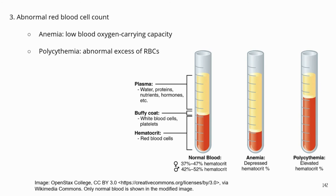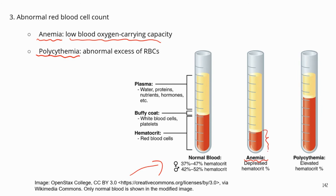The third condition is about red blood cell count. If you have a very low red blood cell count, that could lead to anemia — basically a condition where the body has very low blood oxygen-carrying capacity. This could be caused by many reasons: if your body does not take in enough iron, or if you have blood loss. On the other hand, if your body has too many red blood cells, this condition is called polycythemia. You can see in the diagram that in anemia the volume of red blood cells is much lower than normal, while in polycythemia it is much higher.